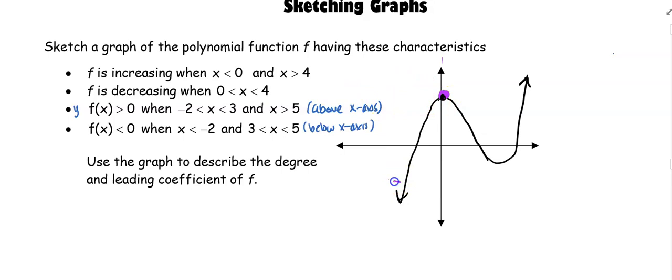Anytime it's less than 0, so on the left-hand side of this, my line is increasing. It's also going to increase when x is 4, so that tells me that this point right here is 4 because at 4 my graph is going to switch directions and start increasing.